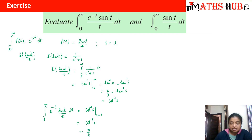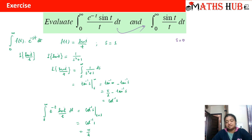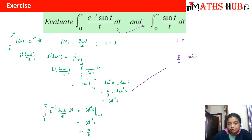For the second part of this integral, there is no exponential term, meaning s = 0. Using the same result, we get π/2 − tan⁻¹(0) = π/2 − 0 = π/2. Therefore, the integral from 0 to infinity of sin(t)/t dt equals π/2.